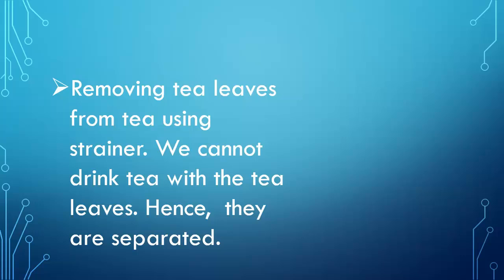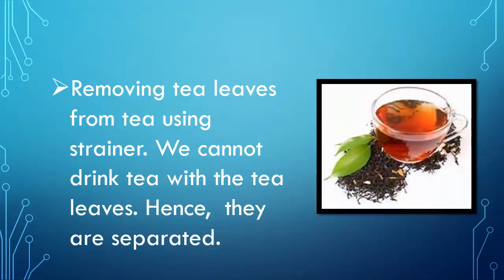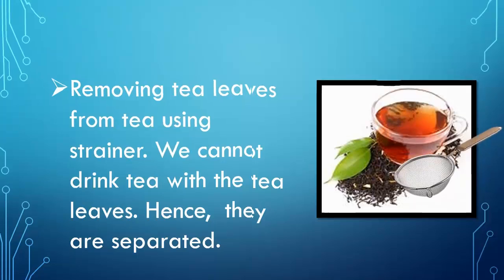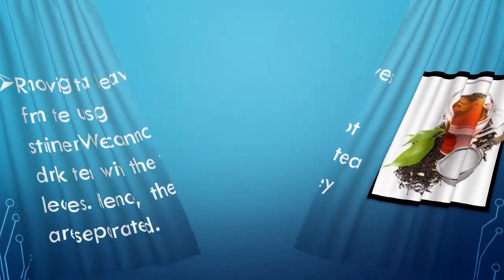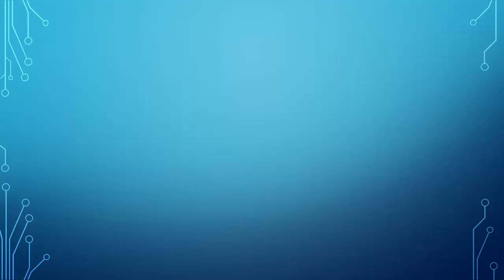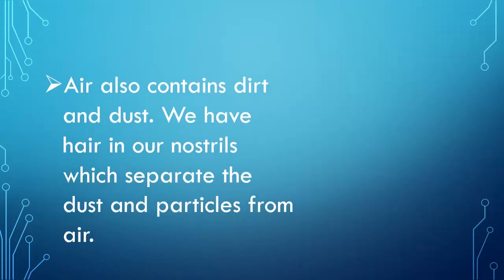Another example is removing tea leaves from tea using a strainer. We cannot drink tea with the tea leaves, so they are separated. Air also contains dirt and dust. We have hair in our nostrils which separates the dust and particles from air.